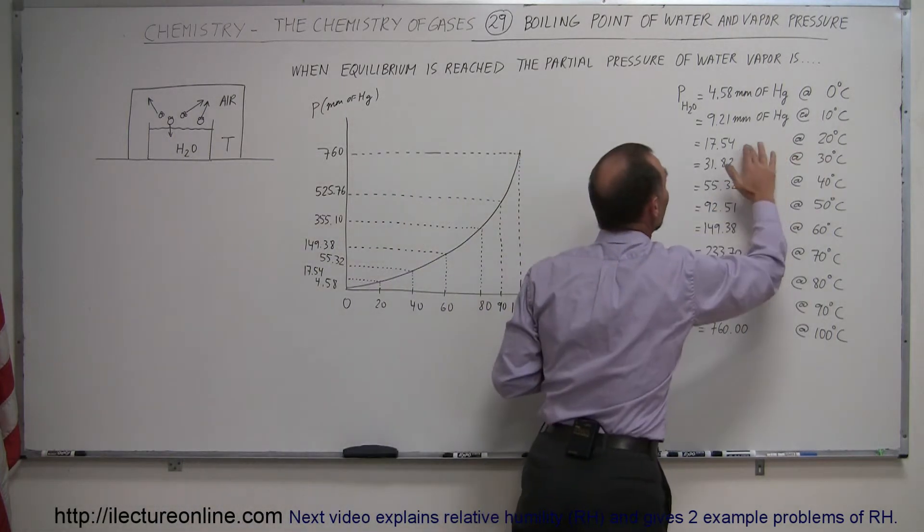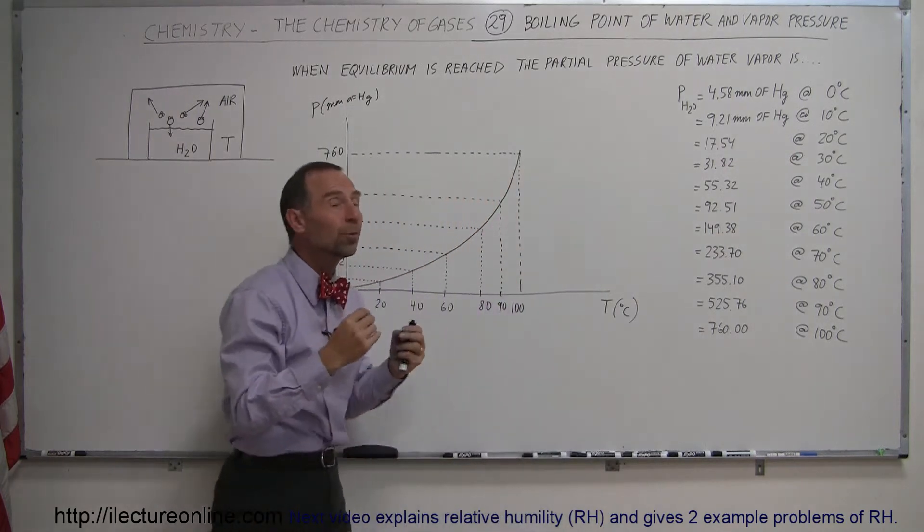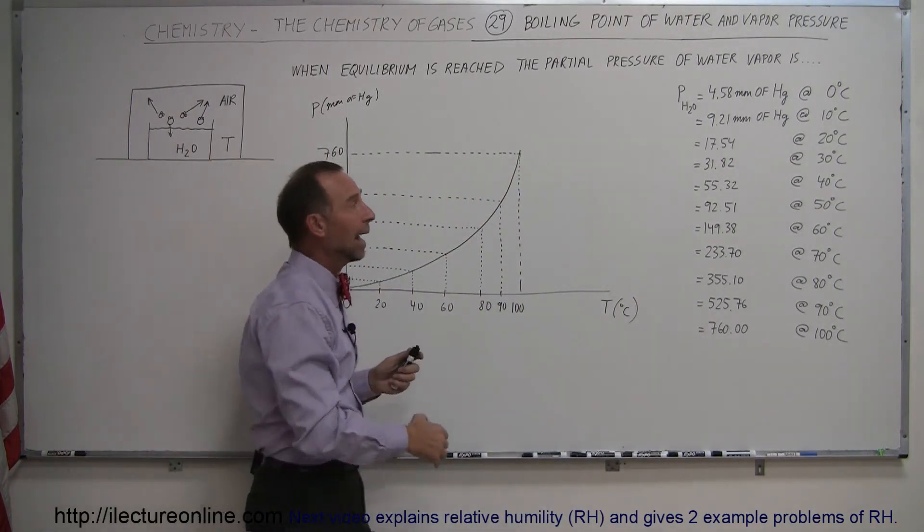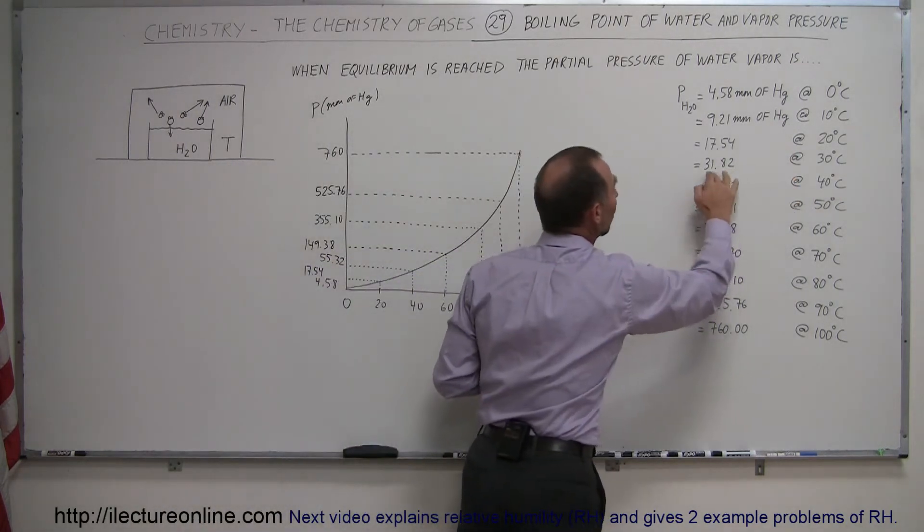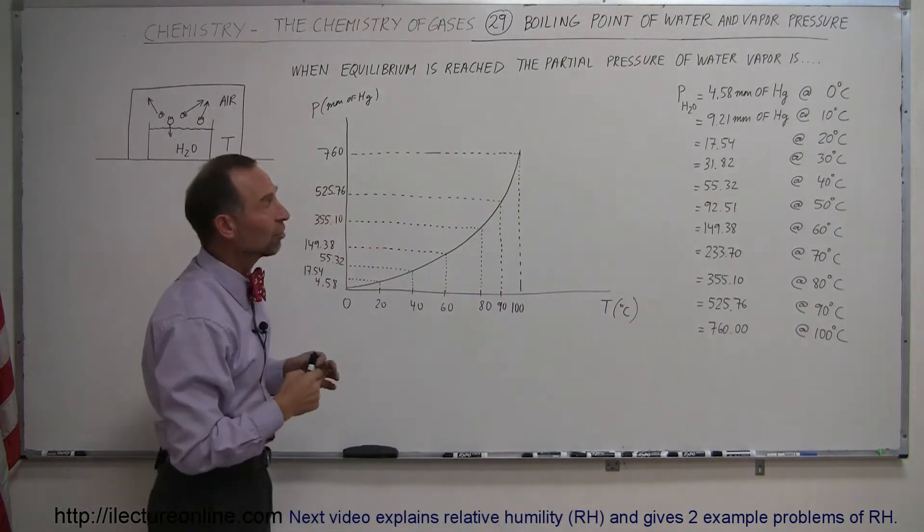However, at 20 degrees centigrade, that will have increased to over 2% of the total pressure in the air. At 30 degrees centigrade, that will be almost 4% of the total pressure in the air and so forth.